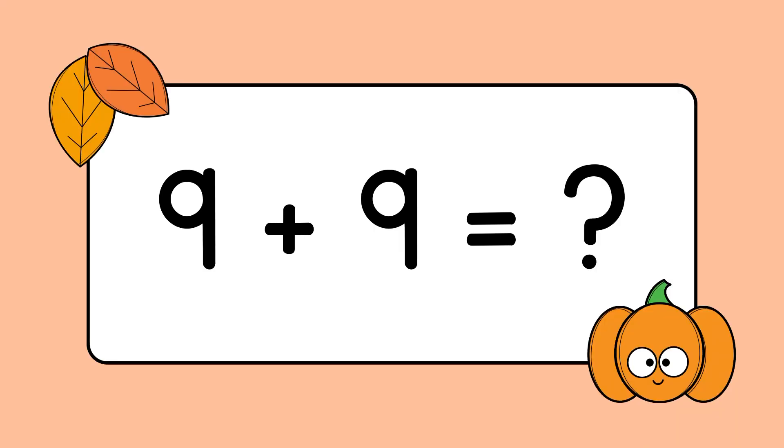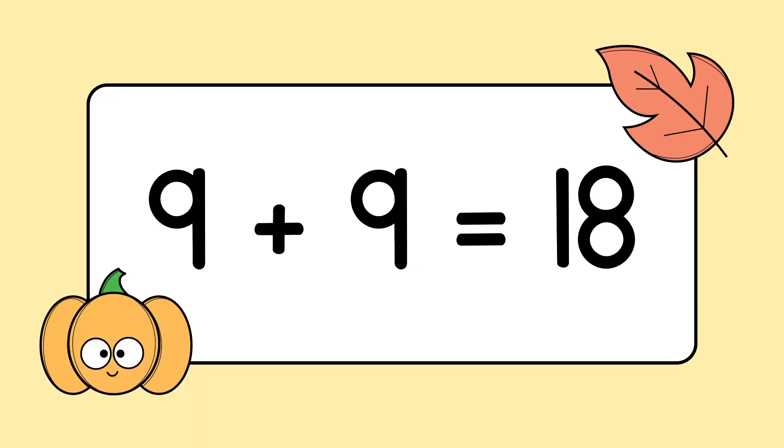What is 9 plus 9 equal to? 9 plus 9 is equal to 18.